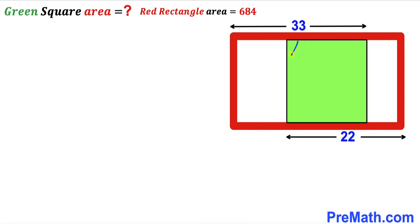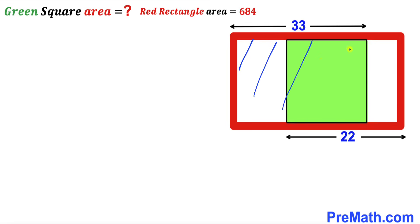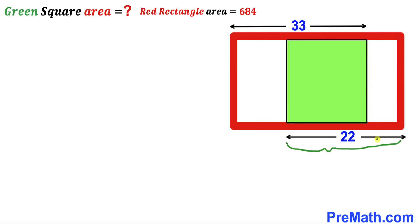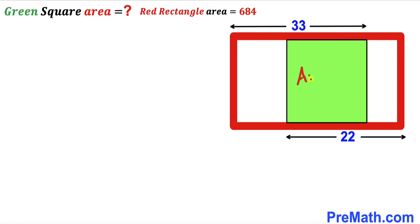Welcome to PreMath. In this video we have a green shaded square fully confined in a red rectangle. The horizontal segment on the top is 33 units, the horizontal segment at the bottom is 22 units, and the area of the red rectangle is 684 square units. Our task is to calculate the area of the green shaded square.